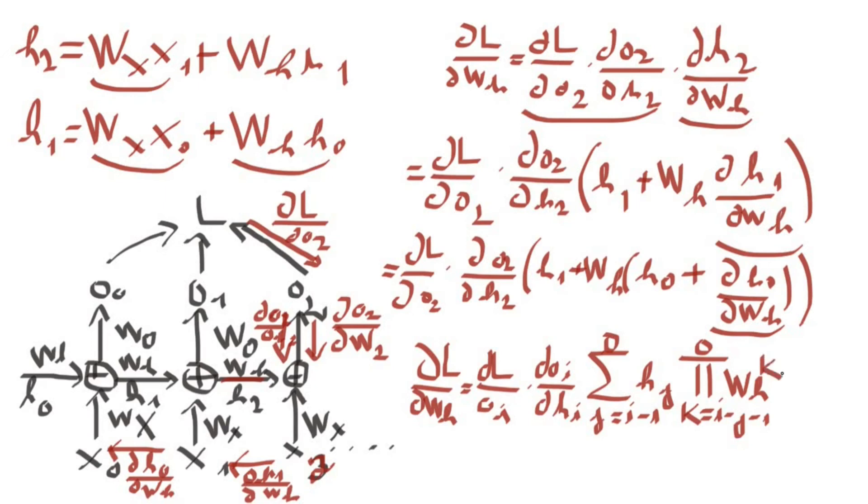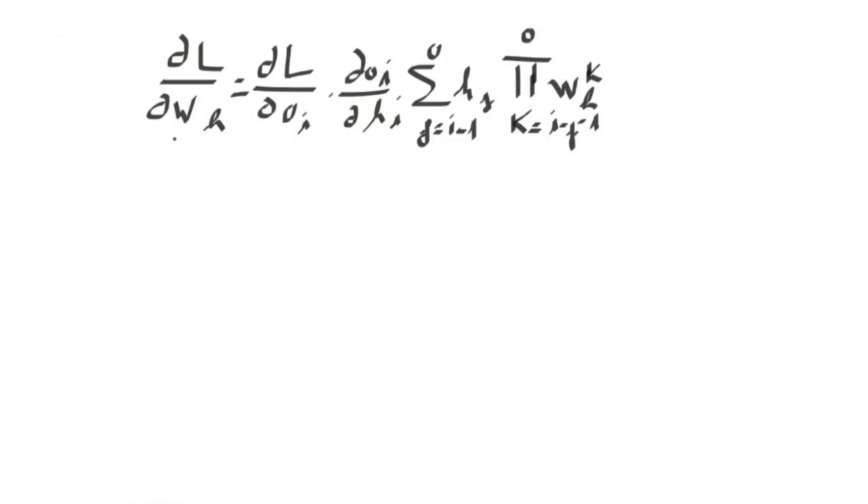So to recap, we have the following formula to compute the gradients for the matrix wh. And what is the problem here? The problem comes from this term here, the product over the matrix wh. And what happens here? For the first case, let's consider that our matrix has values between 0 and 1, and let's suppose that we are trying to compute the gradients for a later step in the sequence, let's say for y equals 100.